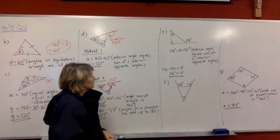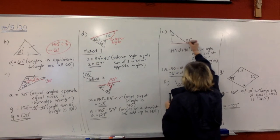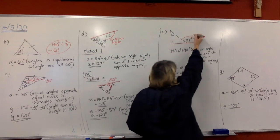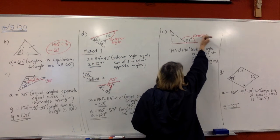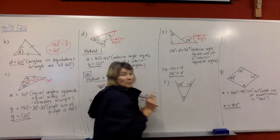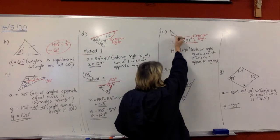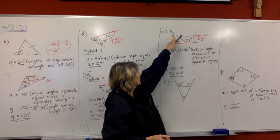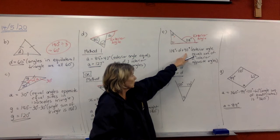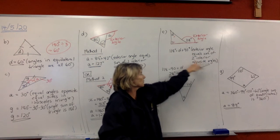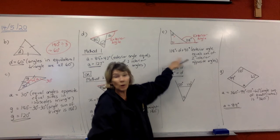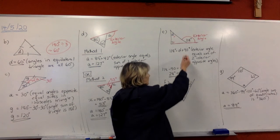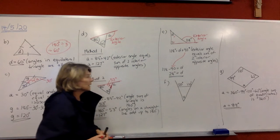In E, that side has been extended creating an exterior angle, so we can use the exterior angle rule again. The exterior angle equals the sum of the two interior opposite angles, so 118 equals D plus 90 for the right angle. Write the rule down. Now solve the equation: move the 90 to the other side, and D equals 28 degrees.